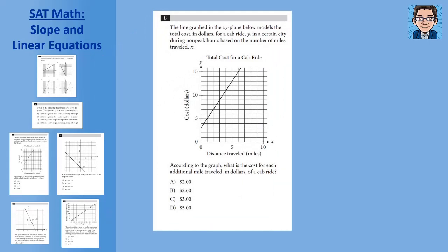SAT problem 3: A graph shows the total cost of a cab ride. We need the cost for each additional mile, which is the slope. The starting point at the y-intercept is the $3 initial cost. Going up two over one, the slope is 2, meaning $2 per mile. We can verify: at 5 miles, the cost is $13 — subtract the $3 initial cost to get $10 for 5 miles, which is $2 per mile.